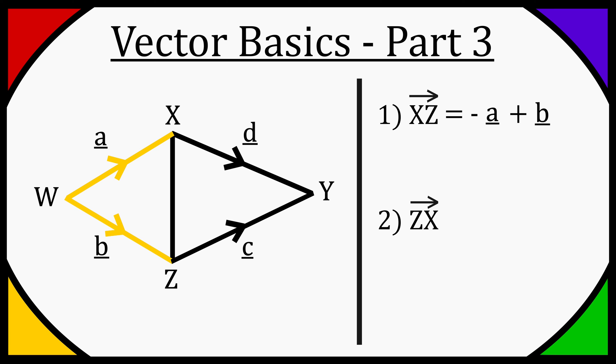So our final answer is going to be negative A plus B, and again the vectors are often written in bold or underlined.